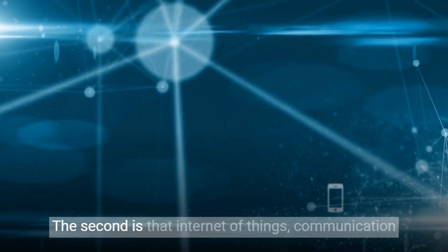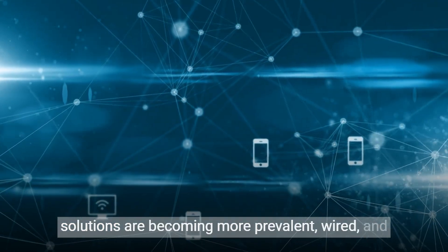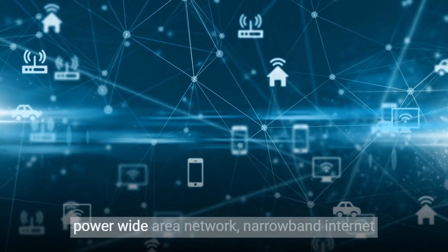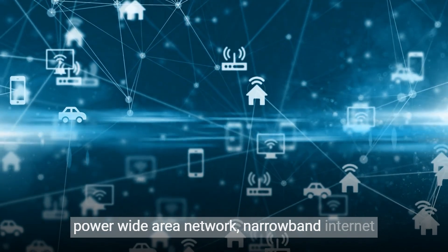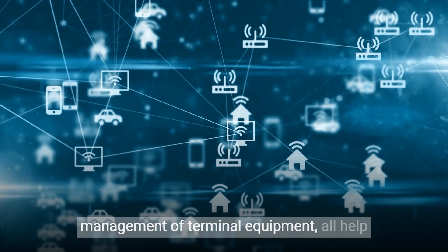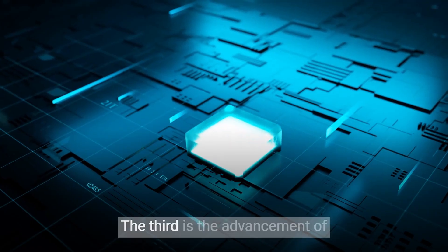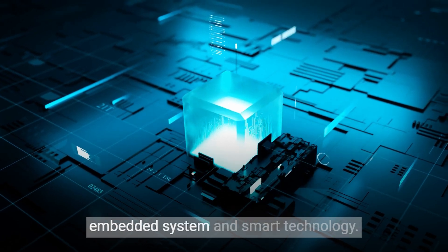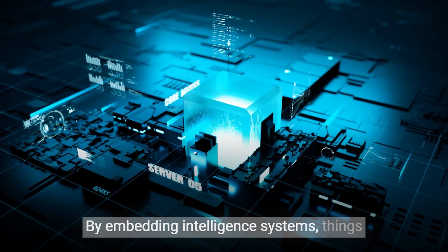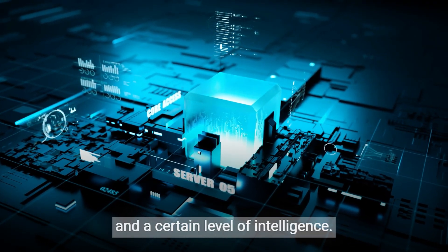The second is that Internet of Things communication solutions are becoming more prevalent. Wired and wireless networks, near-field communication, low-power wide-area network, narrow-band Internet of Things, interconnected and centralized control management of terminal equipment all help to ensure communication network reliability. The third is the advancement of embedded system and smart technology. By embedding intelligent systems, things can achieve active or passive communication and a certain level of intelligence.